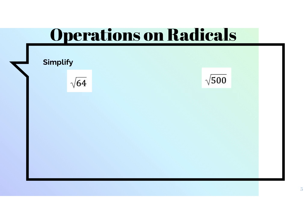We're going to use our perfect squares when we're simplifying. First things first, you want to look and see: is that number an actual perfect square? So if I'm looking at my list, 64 is a perfect square — it's the eighth number in my list. The square root of 64 is going to give me just 8. In this situation, I would be done.